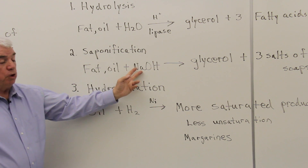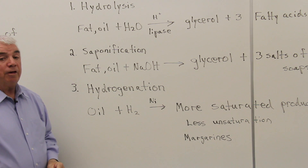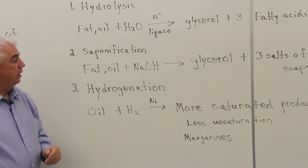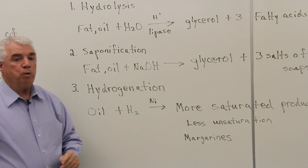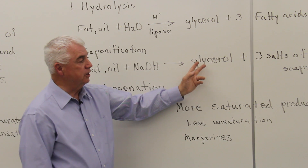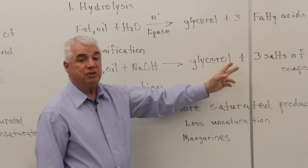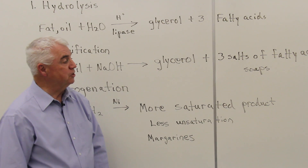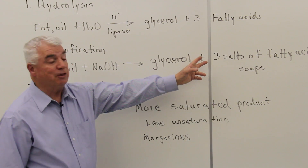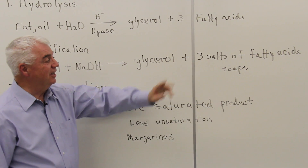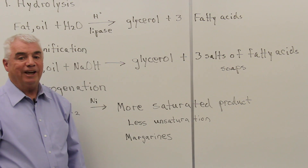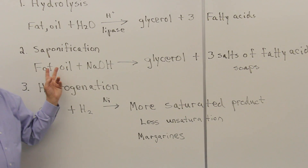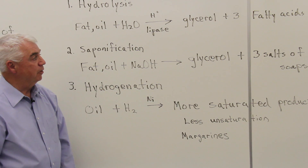If we were to use sodium hydroxide rather than acid, it's a process called saponification. Fats and oils both undergo a similar kind of reaction — we get glycerol, and because it's under basic conditions, rather than getting the fatty acids, we get the salts of the fatty acids. Salts of long-chain fatty acids are known as soaps, so this is a pretty important commercial reaction.